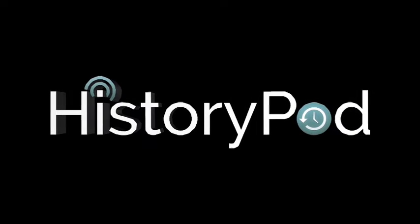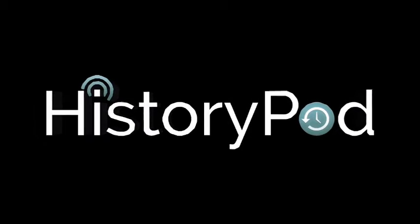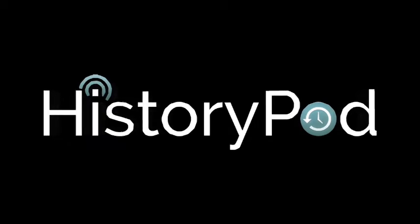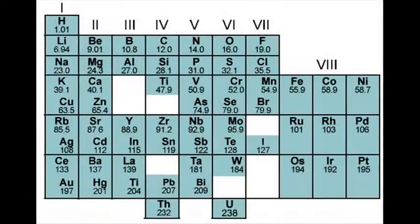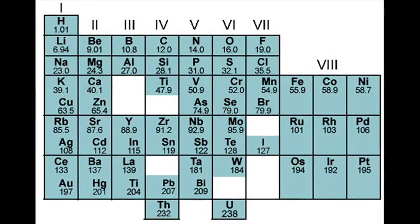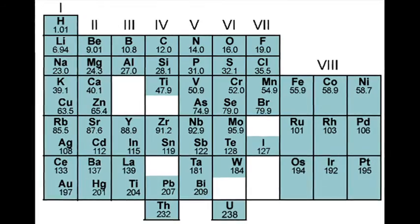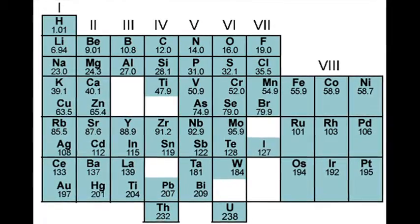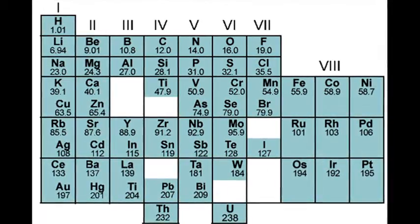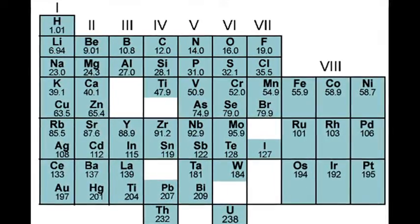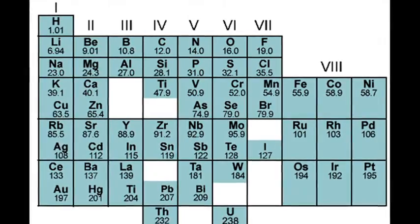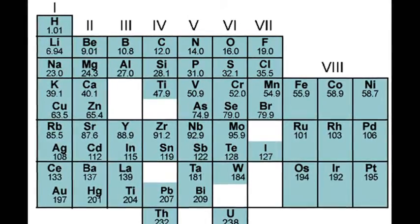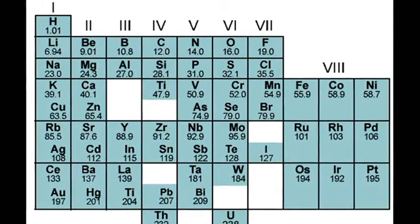Hello, and welcome to HistoryPod. On 6 March 1869, Russian chemist Dmitry Mendeleev presented his periodic table to the Russian Chemical Society.